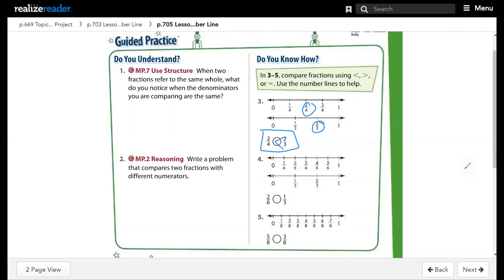Question number 4, we will compare 2 over 6 and 1 over 3. 2 over 6 here and 1 over 3 here. They are above each other, so they are equal.